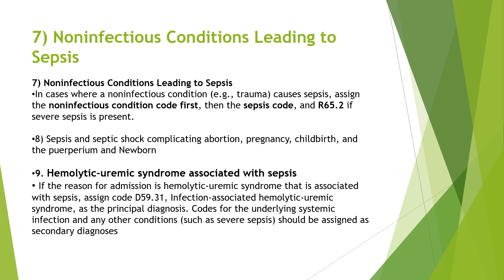For sepsis and septic shock complicating abortion, pregnancy, and newborn, we have separate Chapter 15 and Chapter 16 guidelines which we can refer to later. Lastly, hemolytic uremic syndrome associated with sepsis: if the reason for admission is hemolytic uremic syndrome, assign D59.31 (infection-associated hemolytic uremic syndrome) as the principal diagnosis, and code sepsis or severe sepsis as secondary.